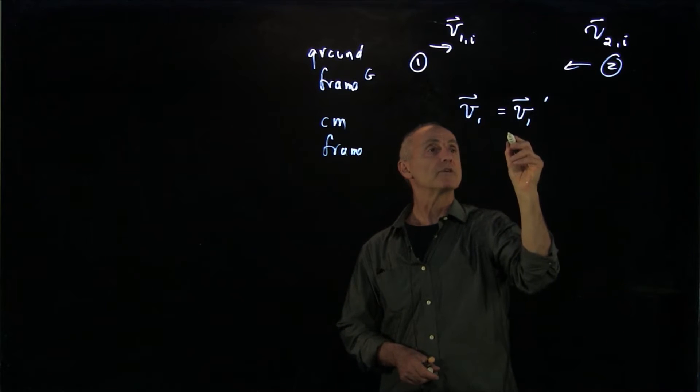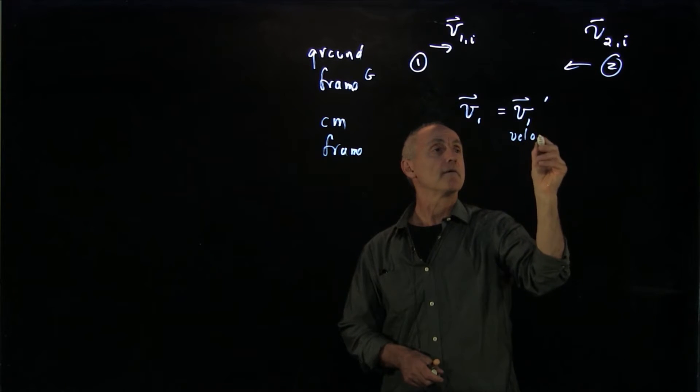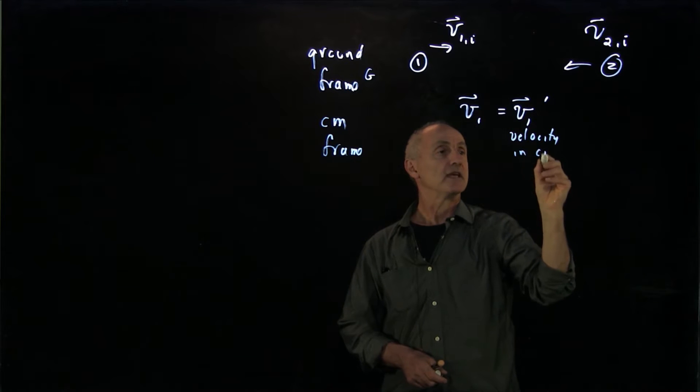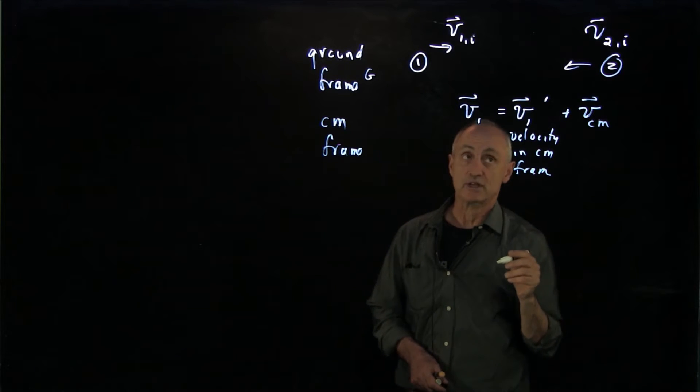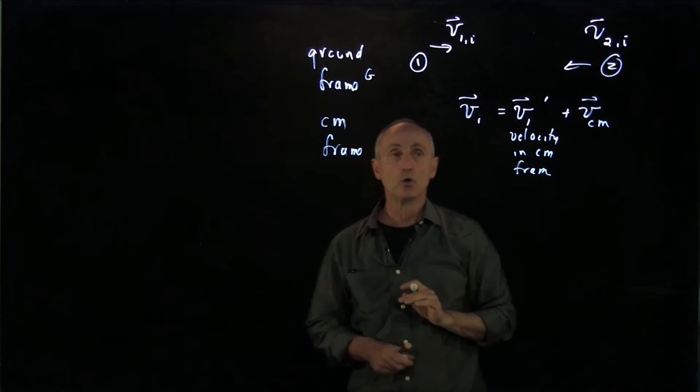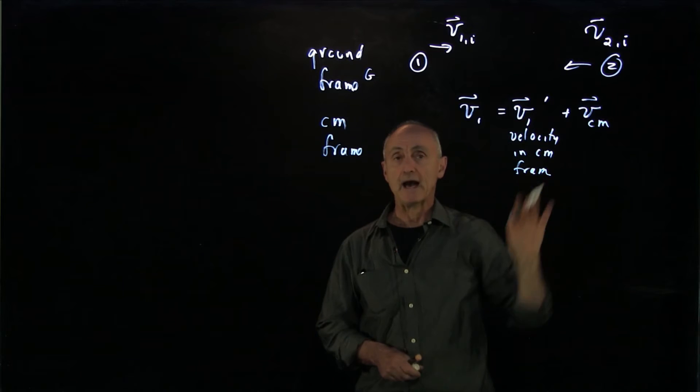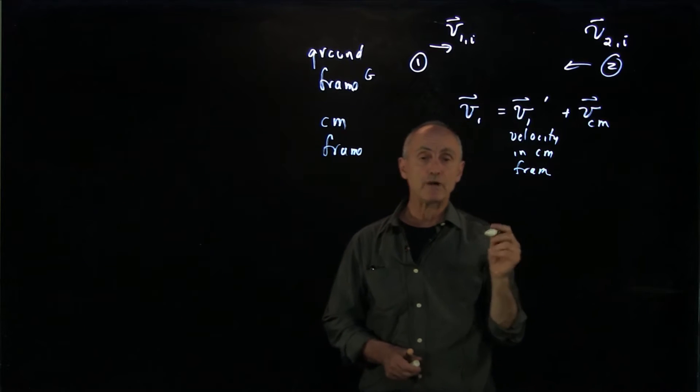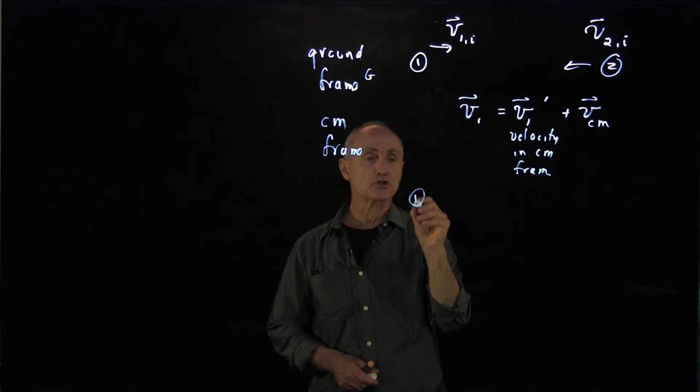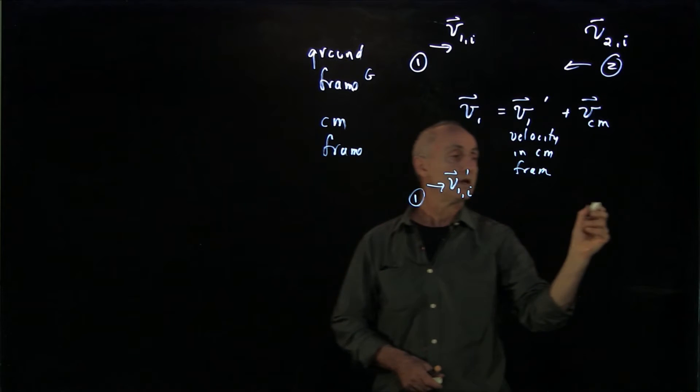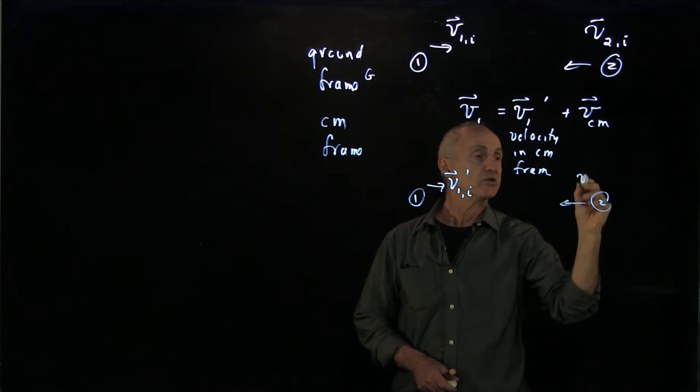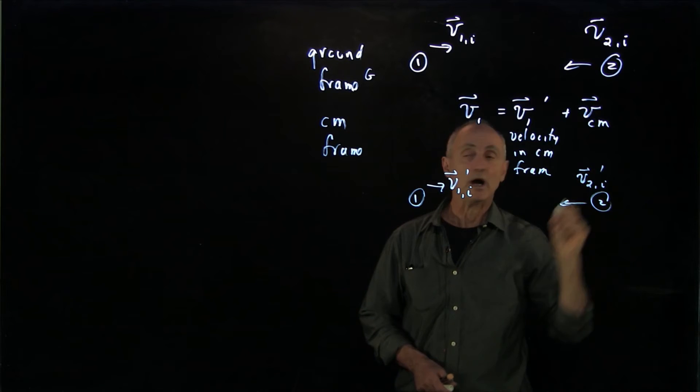The velocity in the center of mass frame, so this is the velocity in the cm frame, plus the relative velocities between the frames. That's the velocity of the center of mass. This was our rule for describing how velocities change in different reference frames. So we can draw the picture in the center of mass frame, v1 initial prime and v2 initial prime.